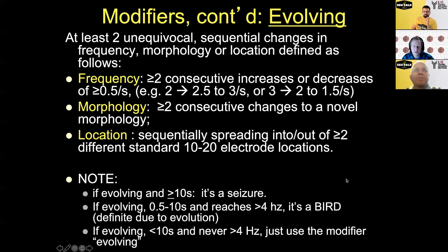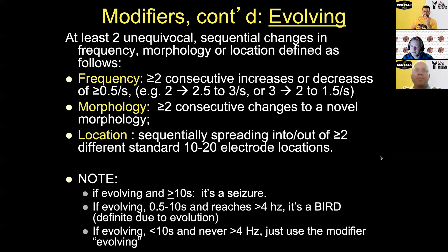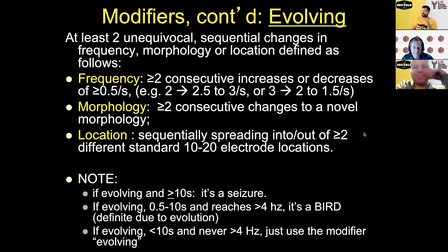Morphology must change to a different morphology twice. For location, it must spread into or out of at least two different standard 10-20 electrode locations. Interestingly, evolution has been used for many decades to define seizures but was never formally defined — it was one of those 'I know it when I see it' things, which tells a beginner nothing and drives them crazy.